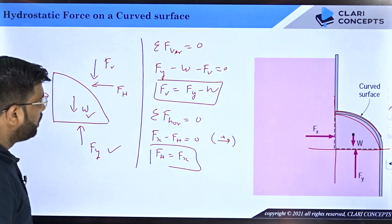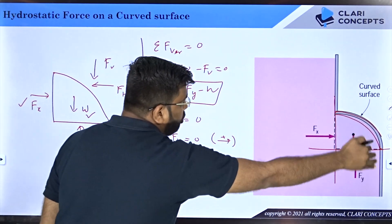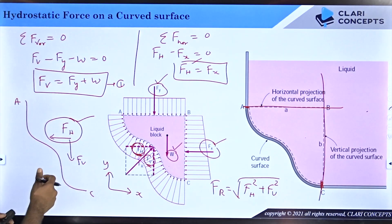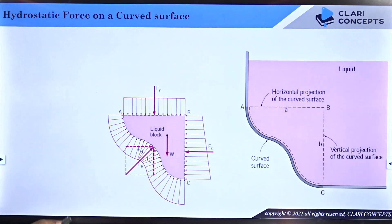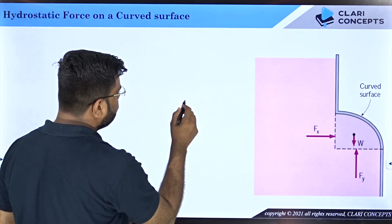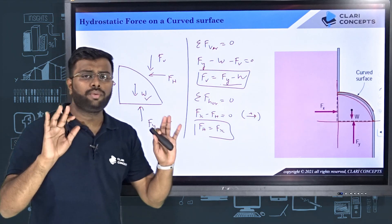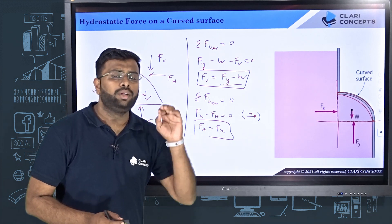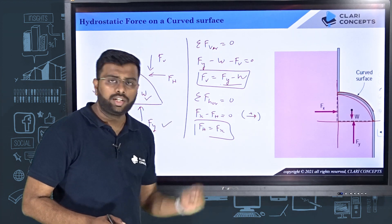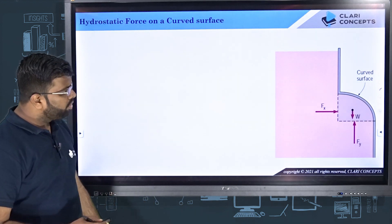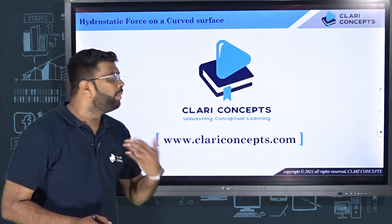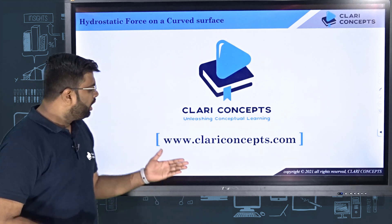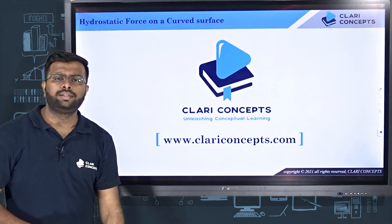Using equilibrium in the vertical direction with upward positive: Fy − W − Fv = 0, so Fv = Fy − W. For horizontal equilibrium, Fx − Fh = 0, so Fh = Fx. Notice that in the previous case Fv = Fy + W, but here Fv = Fy − W — don't remember the formula, go by logic. The equations vary depending on the arrangement of the curved surface. Once you understand the logic, you will always get it right. We will see numericals of this topic in the next class. For more conceptual videos, visit www.cleryconcepts.com. Thank you!